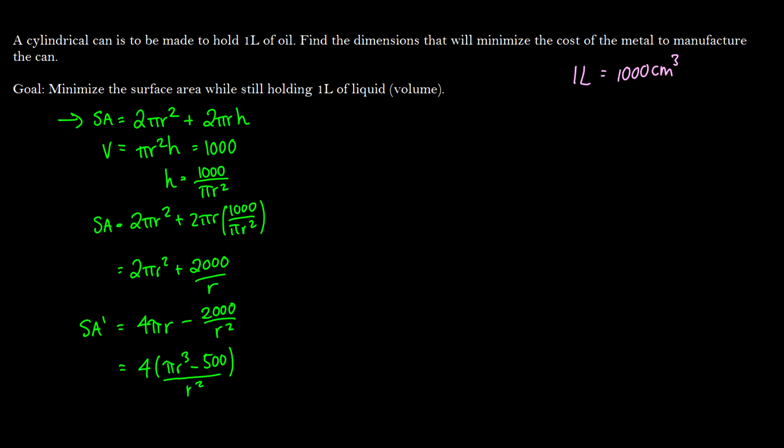So now what we have is we need to find when SA prime is equal to 0. So how do we find it equal to 0? Well, we want pi r cubed minus 500 to equal 0. So this is when pi r cubed is going to equal 500. So when we solve for r here, we're going to get r is equal to the cubed root of 500 over pi. So it is a little bit messy. However...